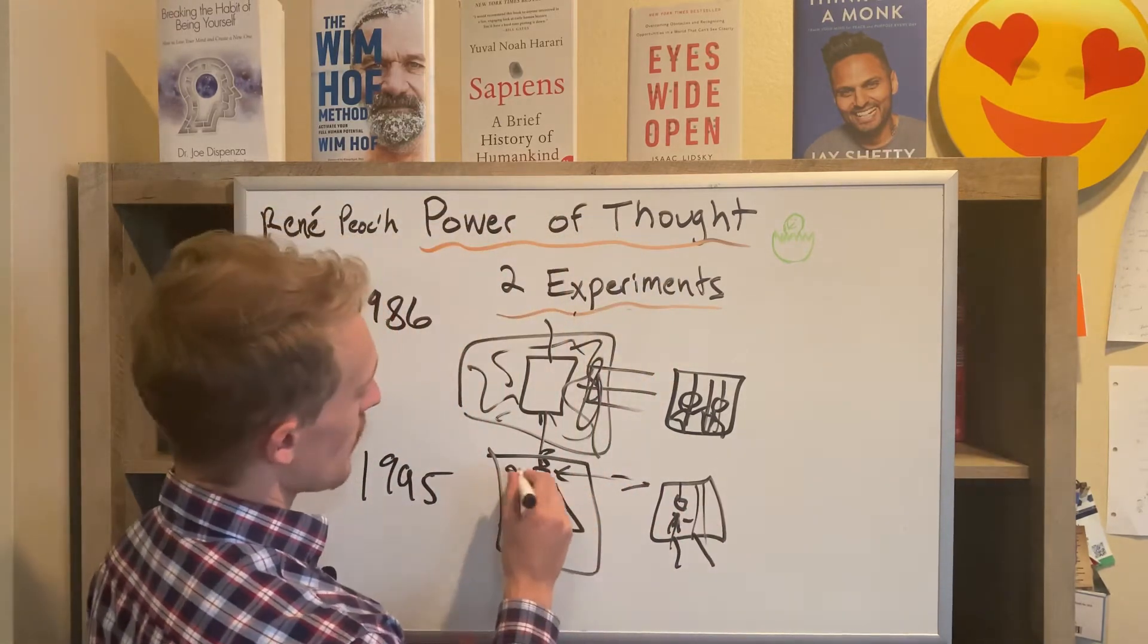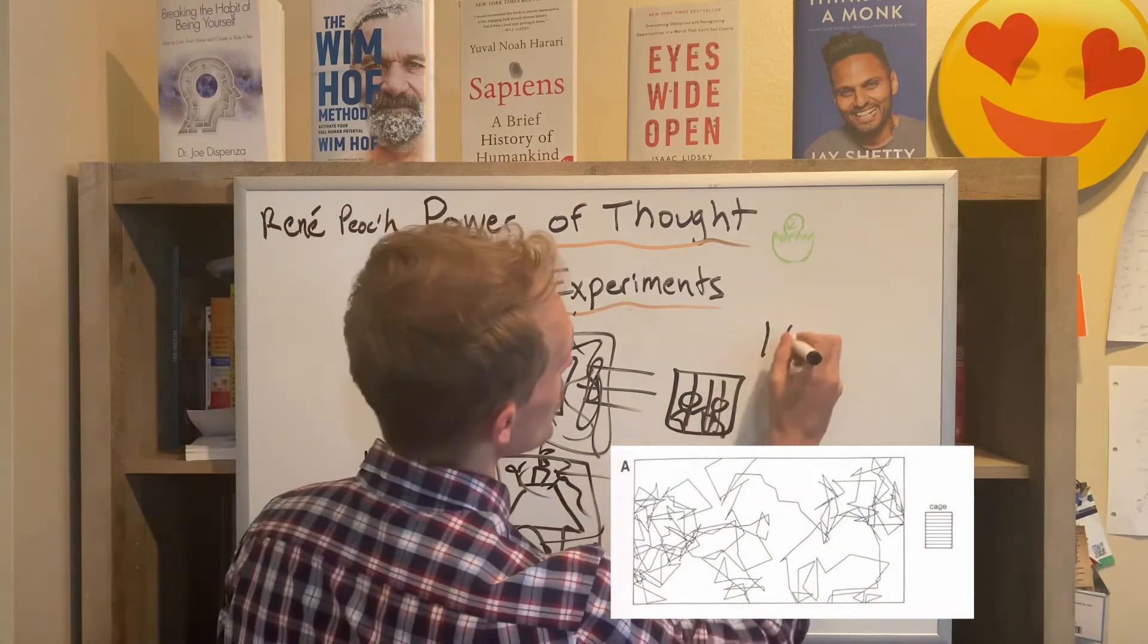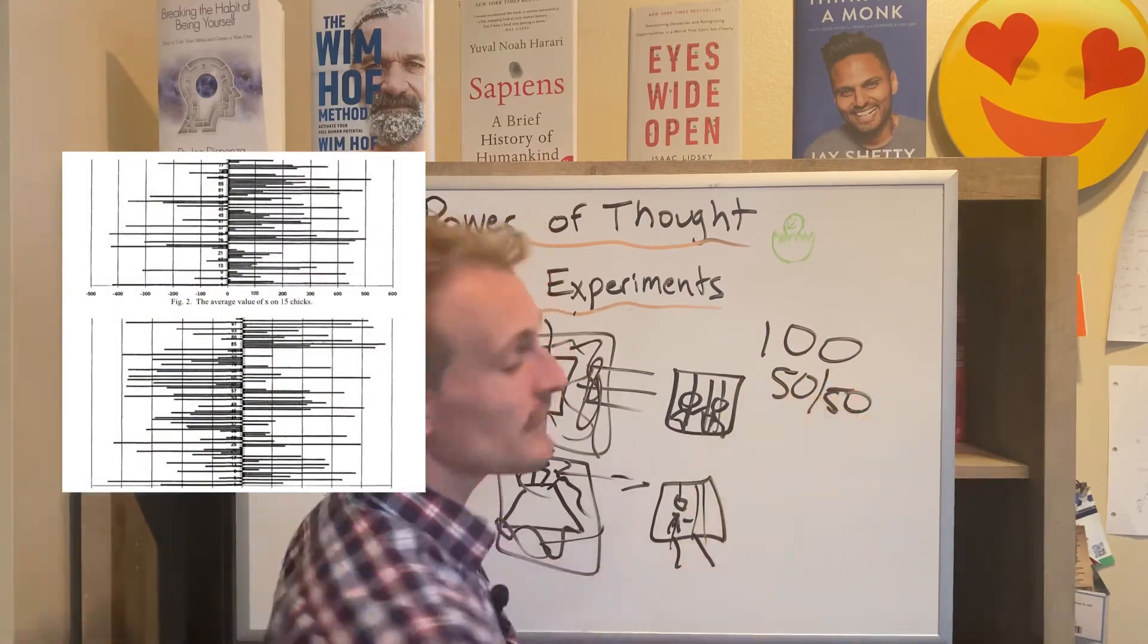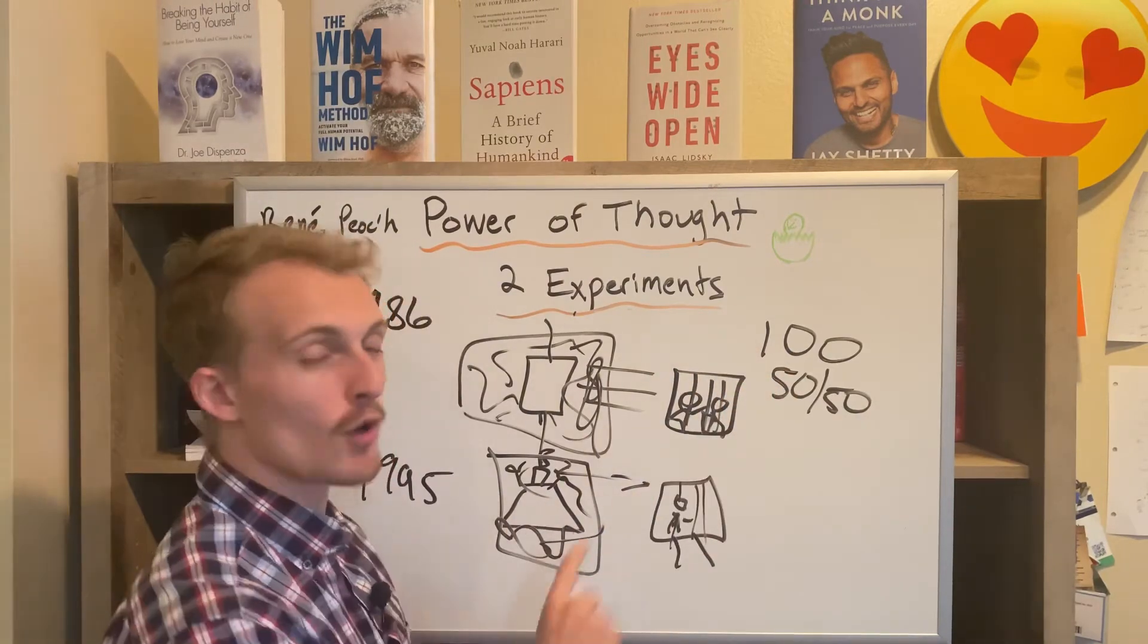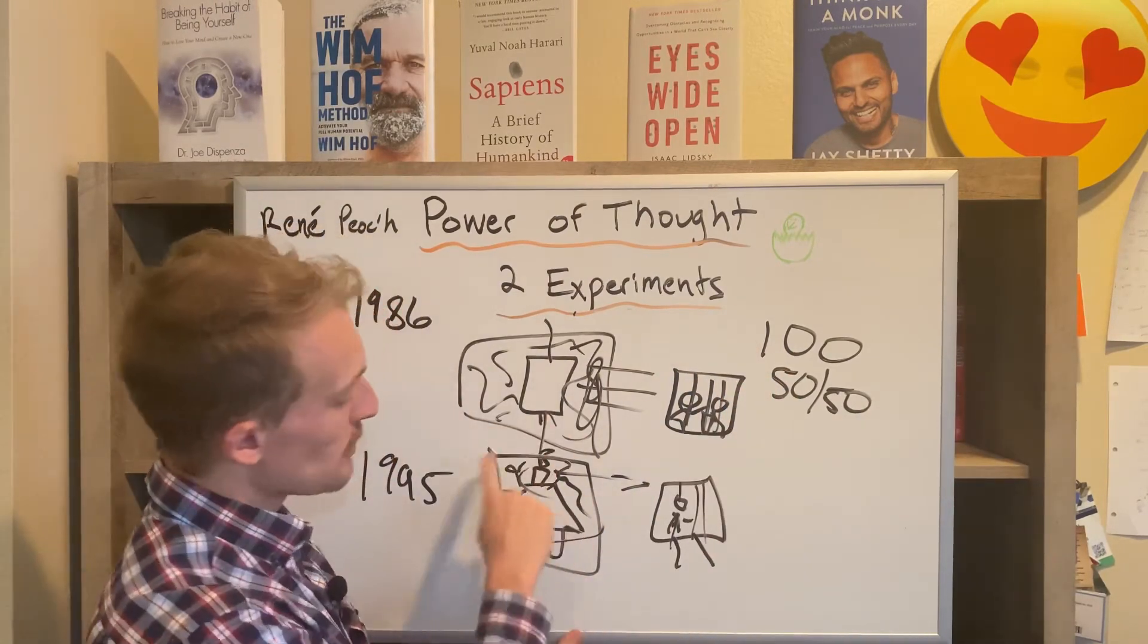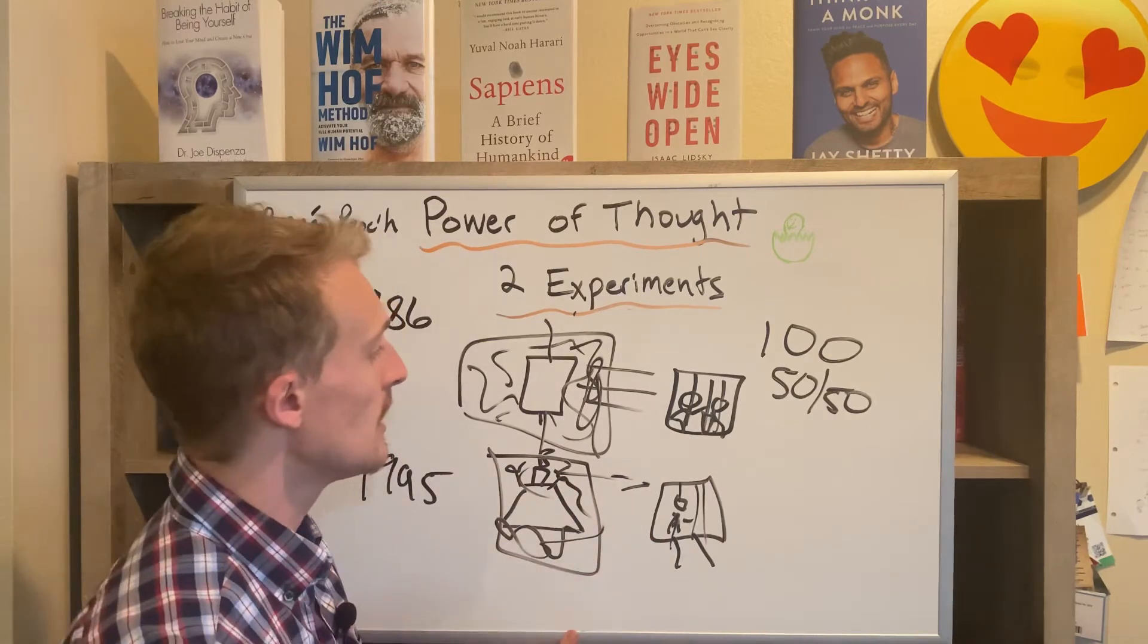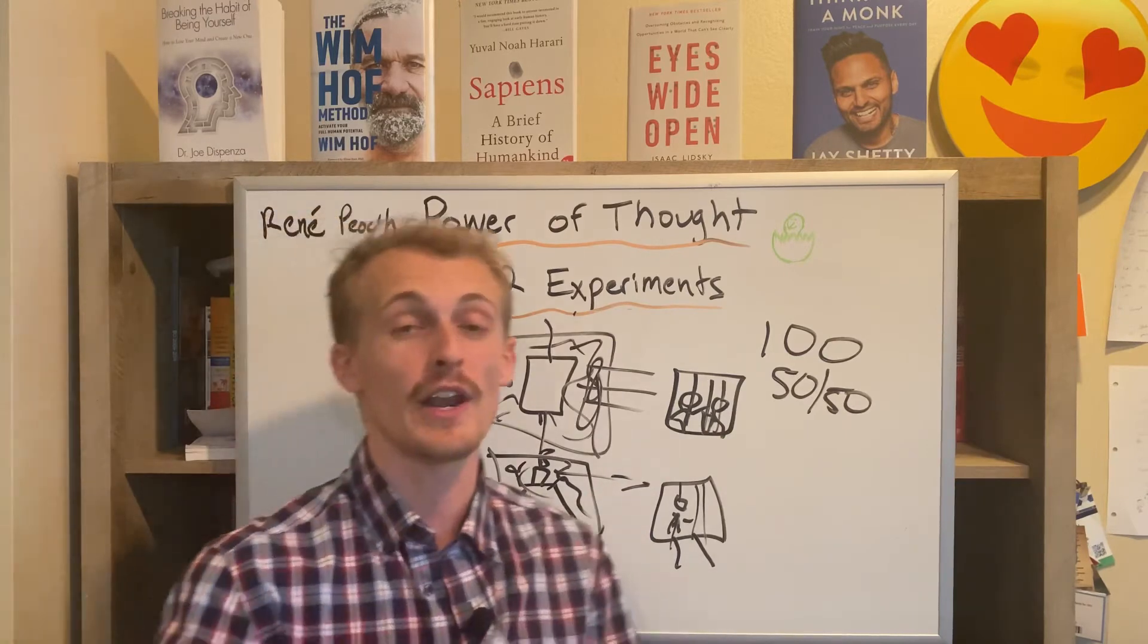This is where it gets really fun, guys. They ran a control experiment. So again, this random number robot generator would go all over the place. They did a hundred control trials and literally the data split perfectly 50/50. So with no chicks in the room, they did a hundred control trials where they just had the robot go about, and it went 50 to the left and 50 to the right, evenly distributed around the room.